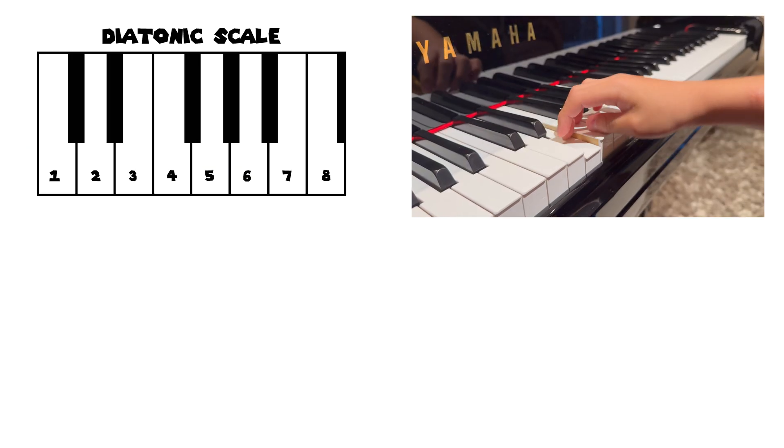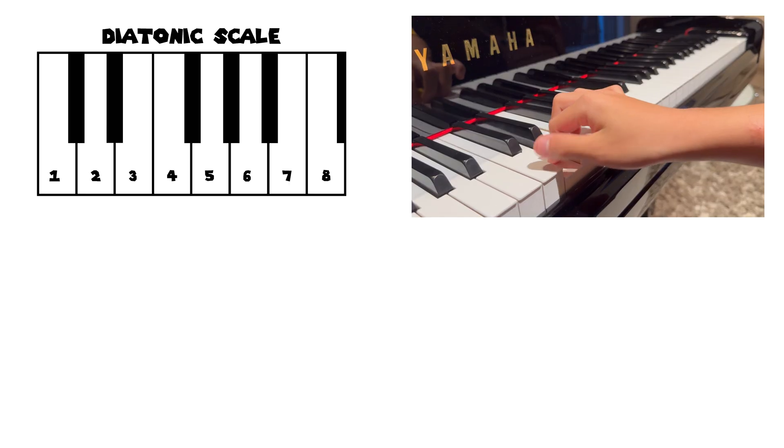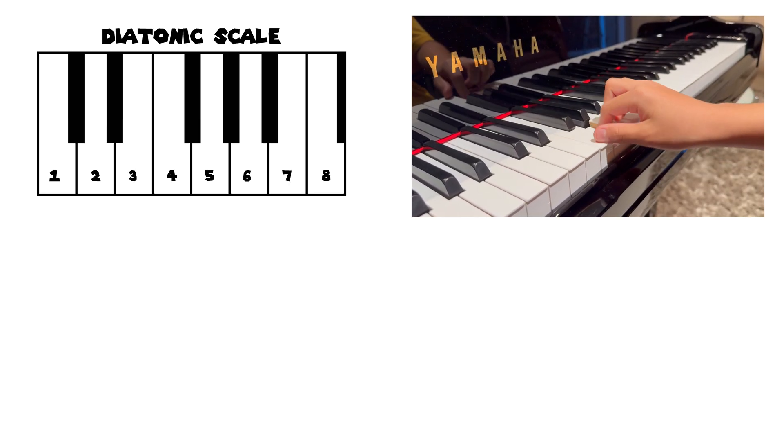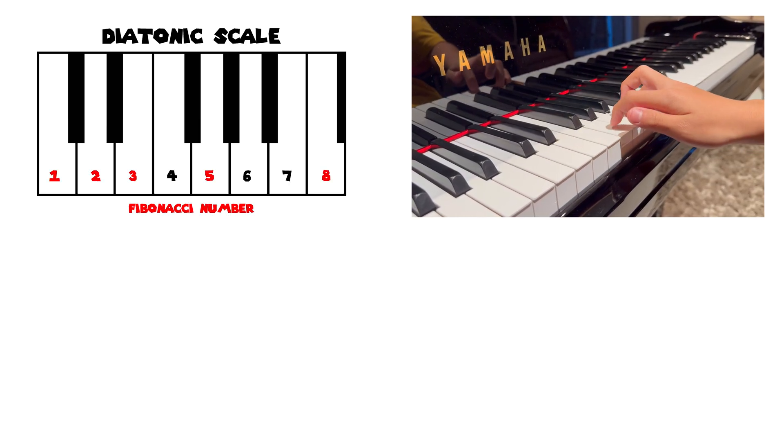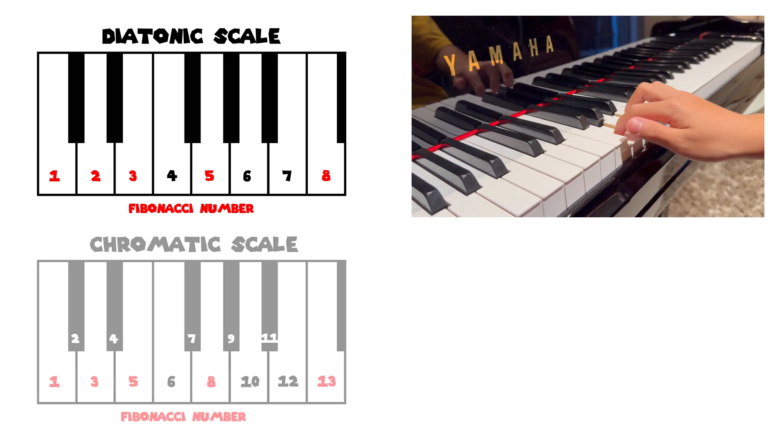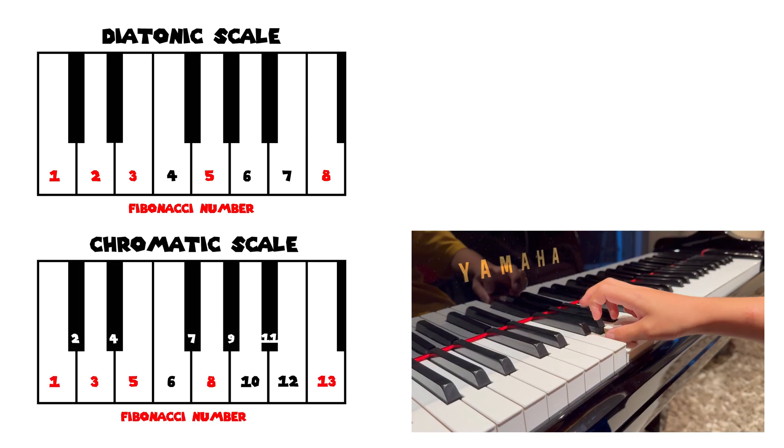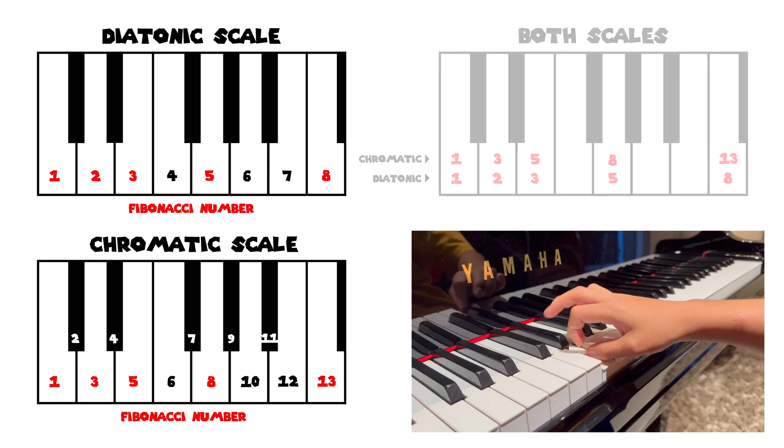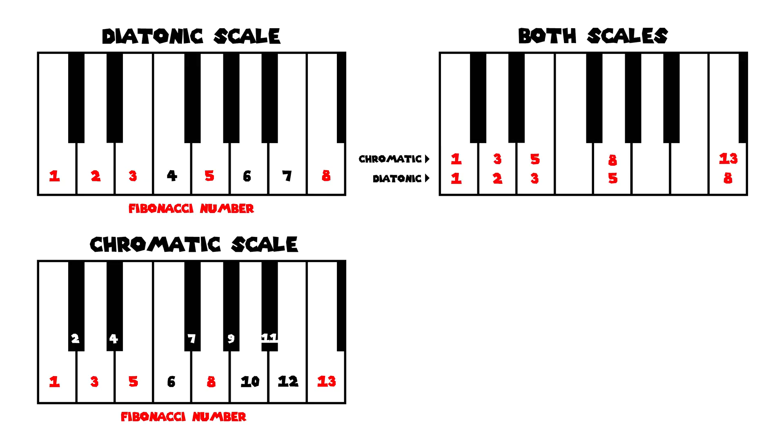If we go back to the previous example and number our piano keys in diatonic scale, here we will highlight the Fibonacci numbers in red, then repeat the process for the chromatic scale. Now, if we superimpose only the Fibonacci numbers of both scales and divide the chromatic scale by the diatonic scale, we will obtain values approaching phi.